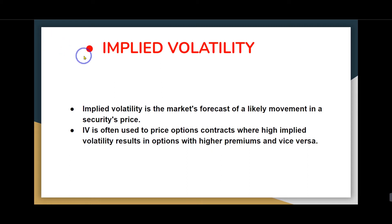We need to be careful with the time value. The market's implied volatility is the market's forecast of a likely movement and the security price. IV is often used to price option contracts, where high implied volatility results in high premiums. This is why we look at the Greeks: GAMMA, THETA, and VEGA. You will find that in the previous video.